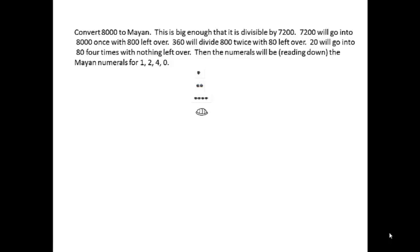Third place, we'll divide 800 by 360. It will go twice, so the third place will be a two and we have 80 left over. 20 will go into that 80 four times, so the second place is a four and there's nothing left over. So the first place is a zero.